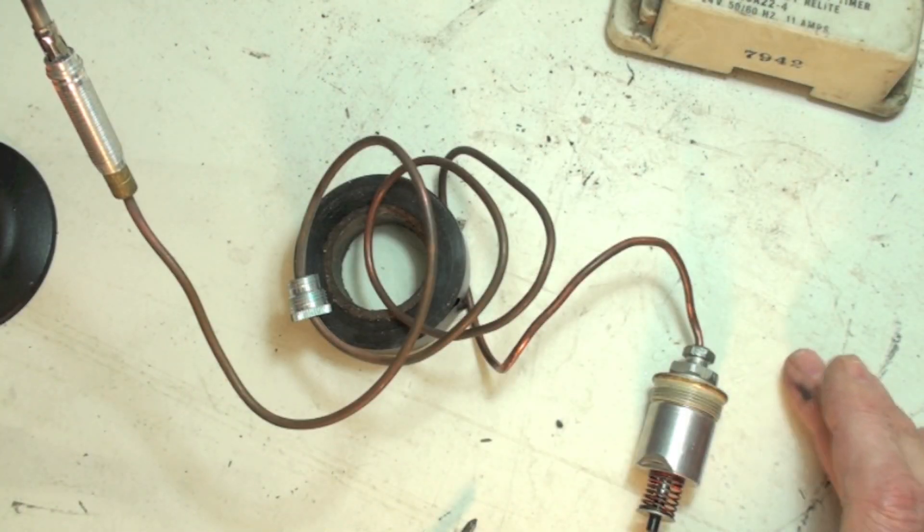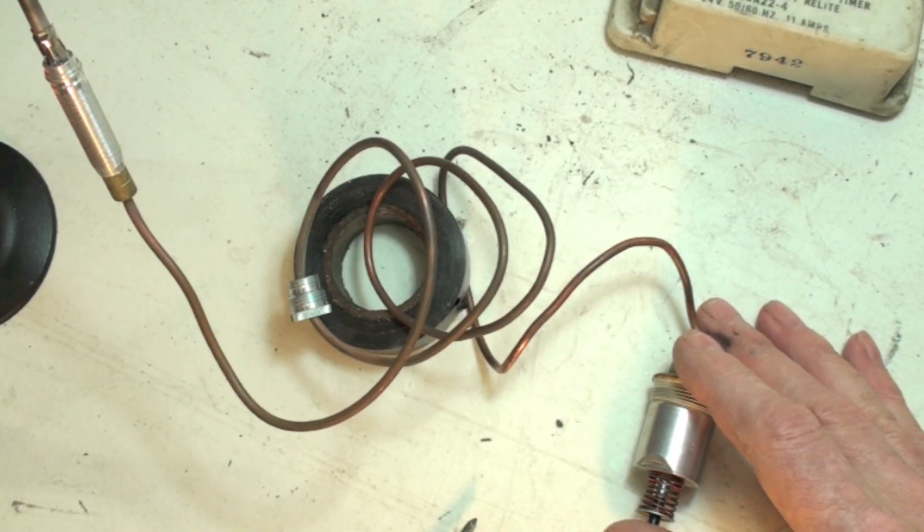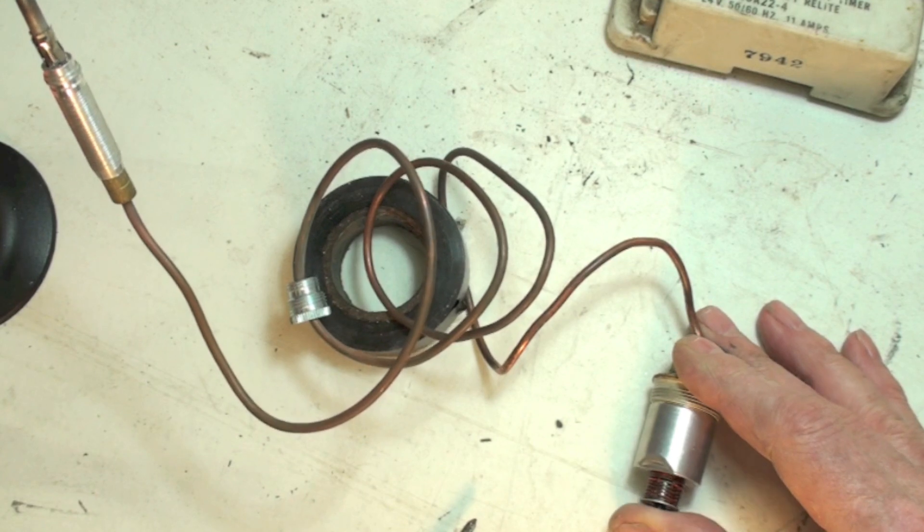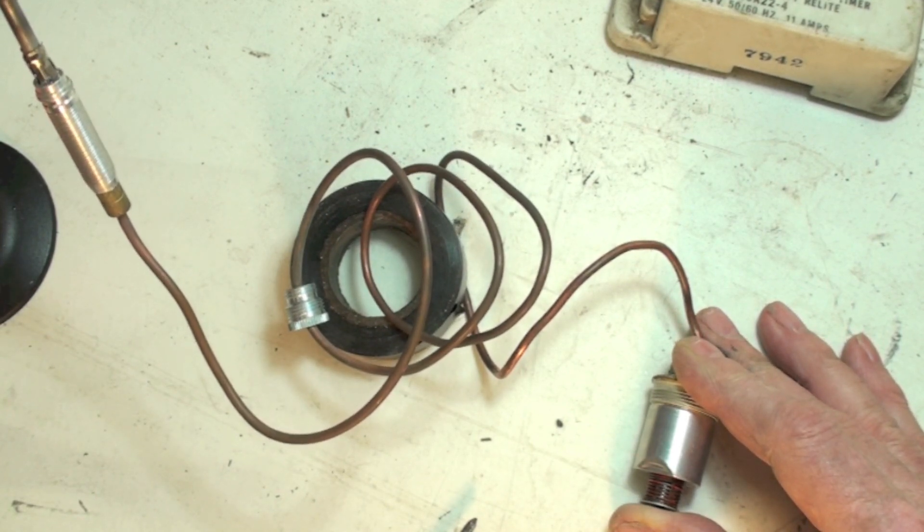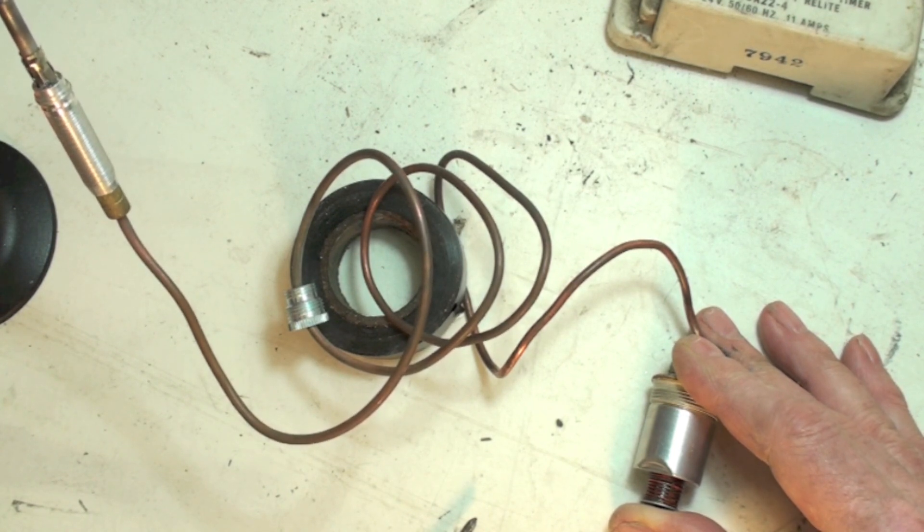When you push your knob on your gas valve to light your pilot, you're pushing this up, and this is actually the flame safety control. This is a little solenoid in here, it's an electric solenoid, and it's operated by the thermocouple.